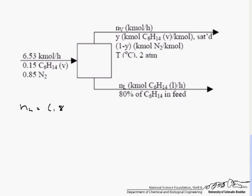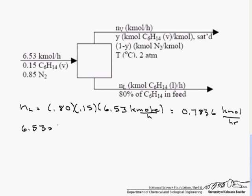We know that it is 80% of the hexane that is in the feed. So the hexane is 15% of the feed, so 0.15 times 6.53 kmol per hour gives us the kmol of hexane that is in the feed, and 80% of that comes out of N sub L. So our N sub L is 0.7836 kmol per hour. Now we can do an overall balance.